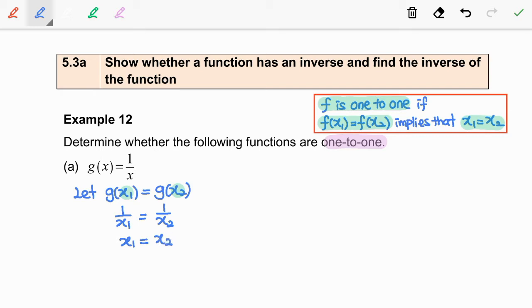So, since g(x1) equal to g(x2) implies that x1 equal to x2, therefore the function g is one-to-one.